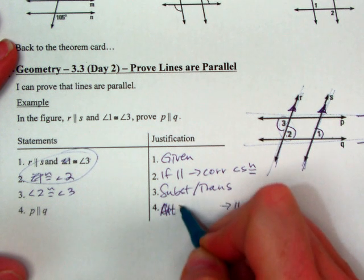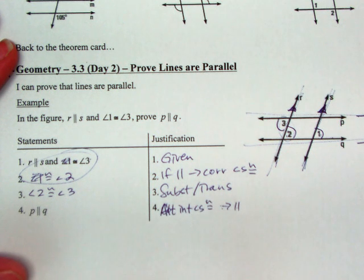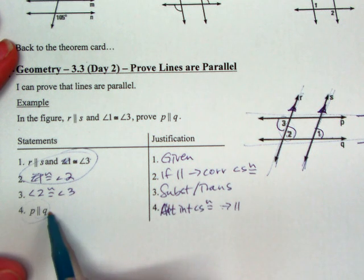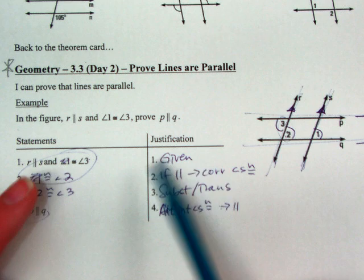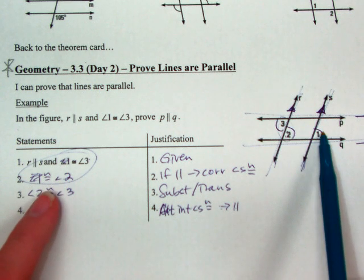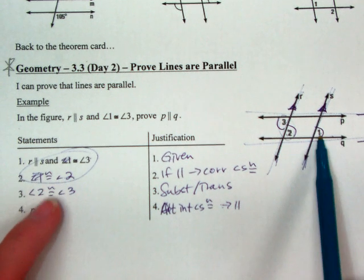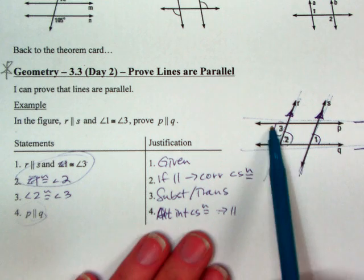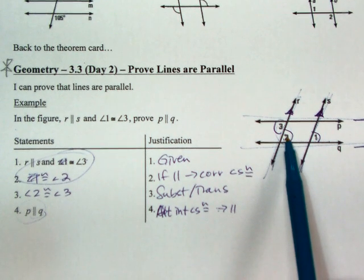So as long as alternate interior angles are congruent, then my lines will be parallel. So I didn't talk about them to begin with. I kind of talked about what I had, and then my other parallel lines. Did a little bit of substitution, and then got alternate interior angles equal, so that means my lines are parallel.